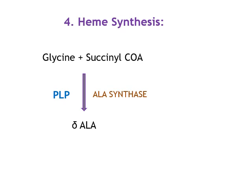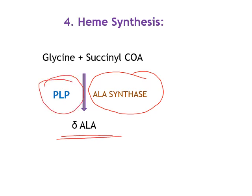PLP also has a role in heme biosynthesis. The first step of heme biosynthesis in the human body is the condensation of glycine with succinyl-CoA in presence of delta-aminolevulinic acid synthase, or ALA synthase enzyme, to produce delta-aminolevulinic acid. This ALA synthase also requires pyridoxal phosphate as coenzyme, so deficiency of PLP can lead to decreased heme production and anemia.